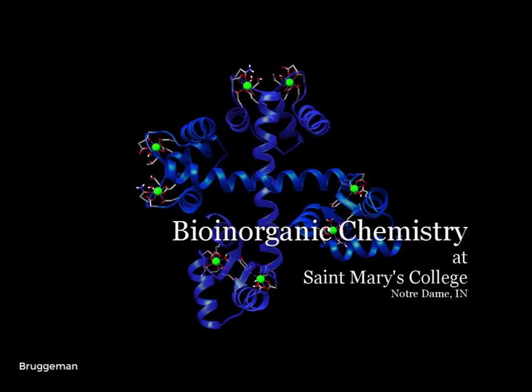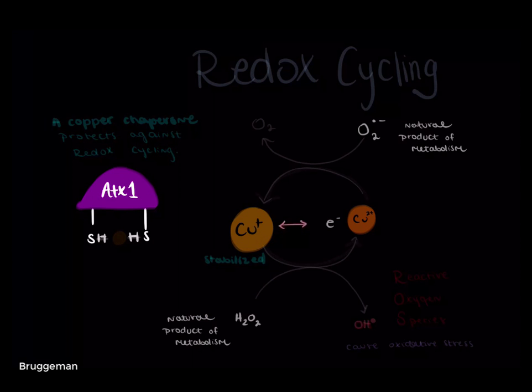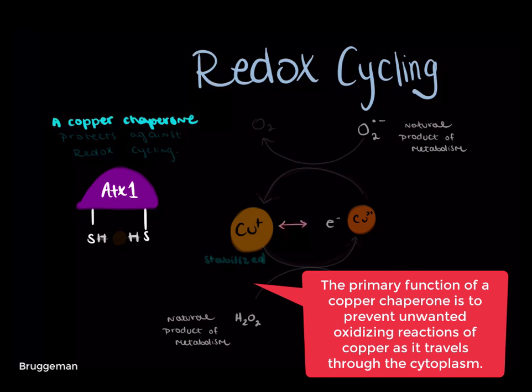A copper chaperone is a protein which binds intracellular copper and delivers it safely to essential intracellular locations. The primary function of a copper chaperone protein is to prevent unwanted and dangerous oxidizing reactions of copper as it travels through the cytoplasm.